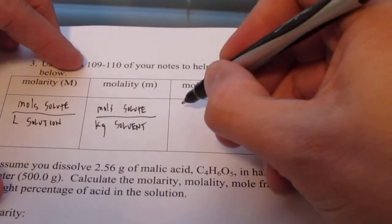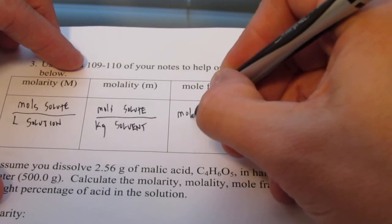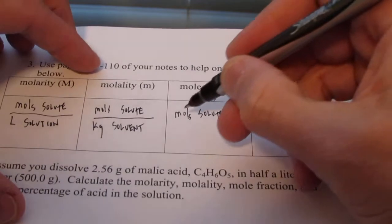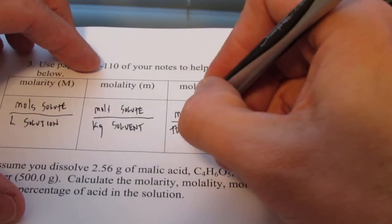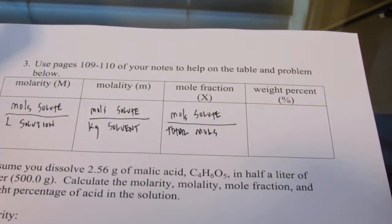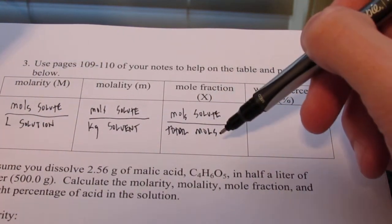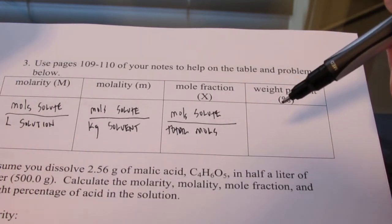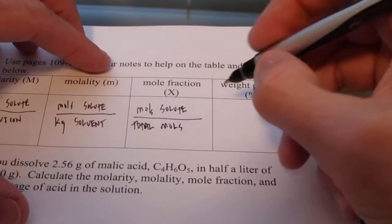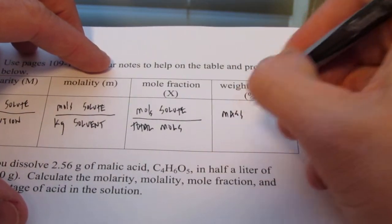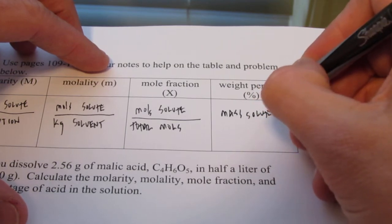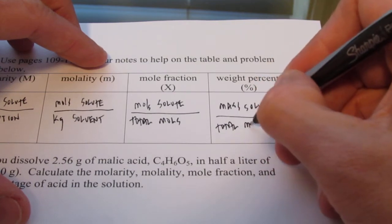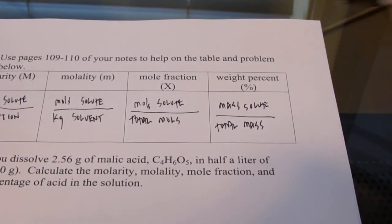Mole fraction would be moles of the component, and usually that's going to be moles of the solute, but it could be moles of solvent if we wished. And that's divided by the total number of moles in my solution. So usually it's moles of solute divided by total number of moles. And weight percent, that one's pretty easy. That's the mass of the component, and usually that's the solute. And that would be in grams. And that would be divided by the total mass of my solution. And that would be weight percent.